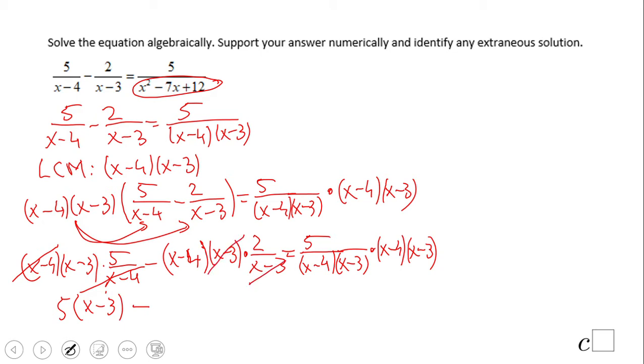Here minus, this x minus 3 cancels this x minus 3, so the fraction is cleared and we have 2 times x minus 4. Don't forget we can switch the multiplication because multiplication is commutative, and here both expressions cancel out so we have left only 5.